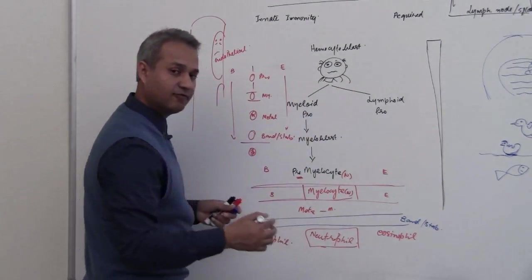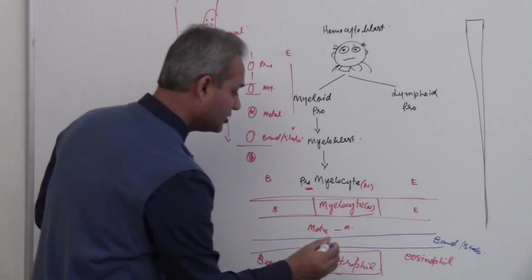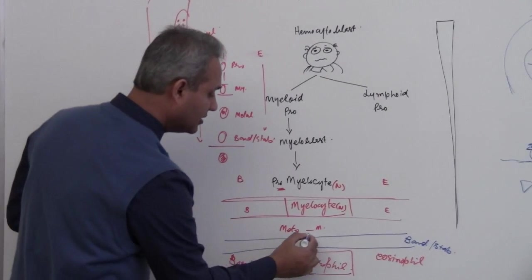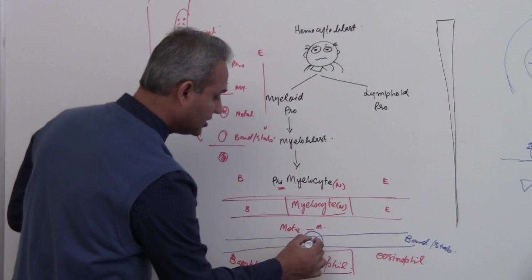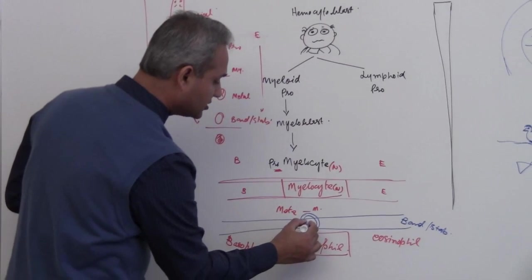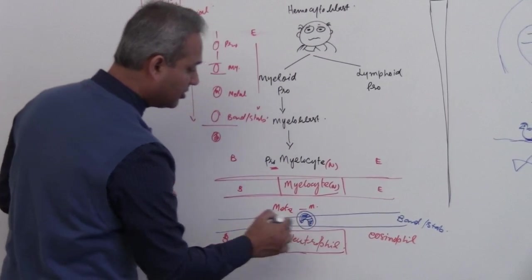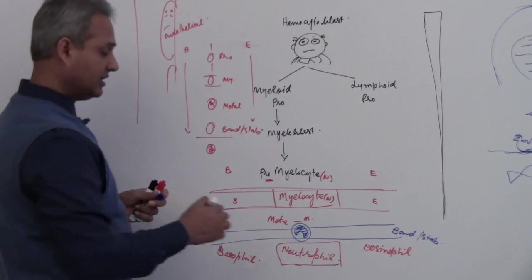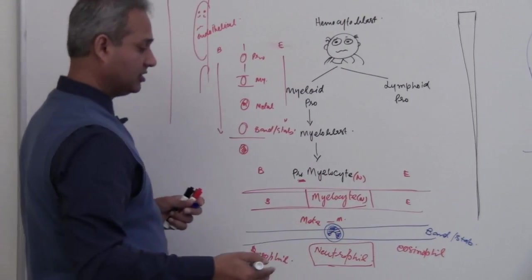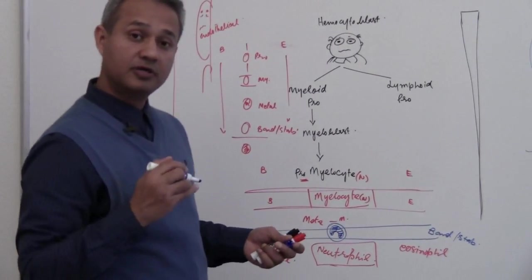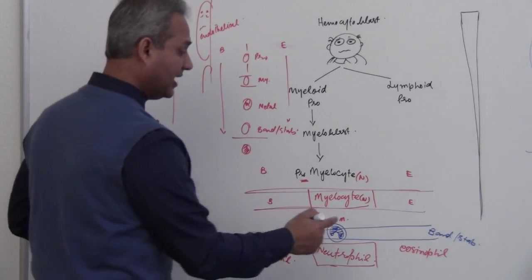Here the cells have almost matured. They're almost done. So for example in case of neutrophil the band stage really has the nucleus almost becoming multi-lobed. And then as it matures and comes out in the blood it becomes multi-lobed.